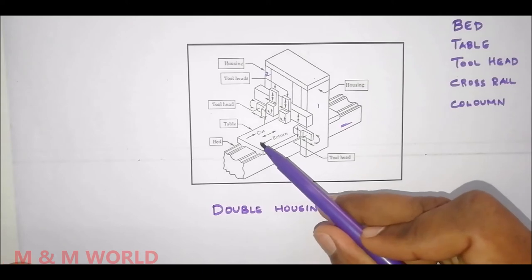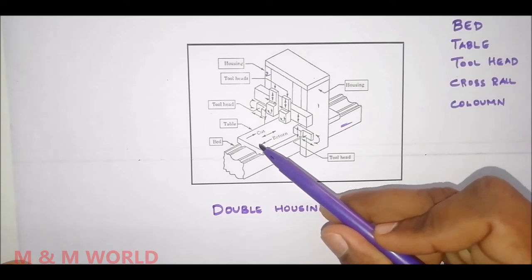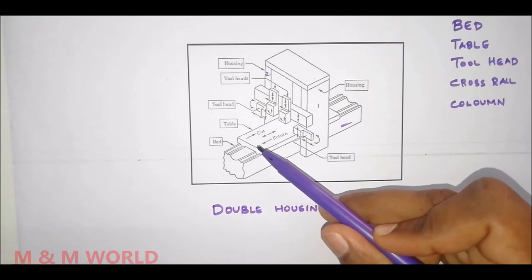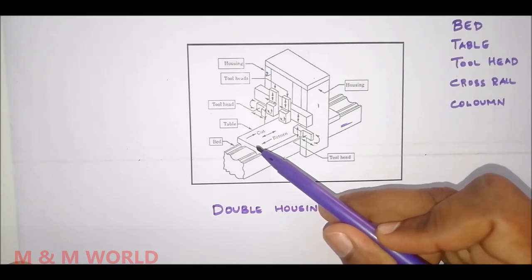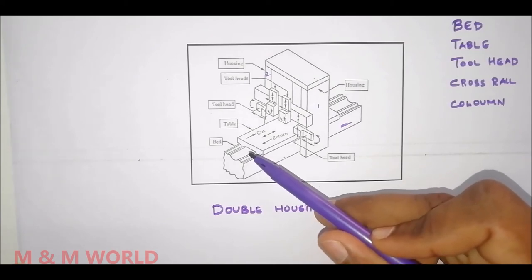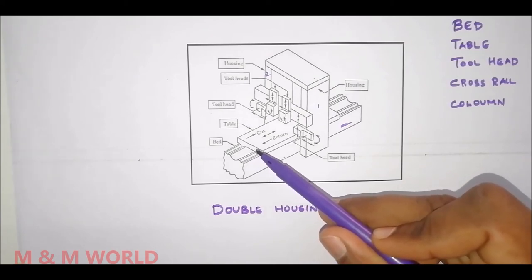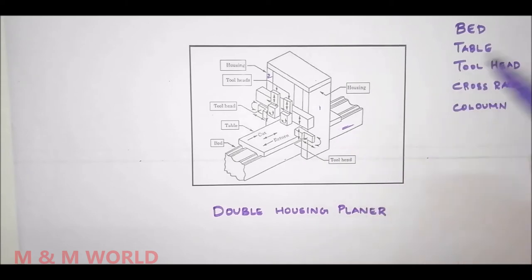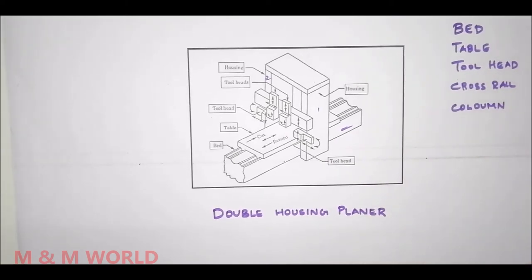The top face of the planer table is accurately finished in order to locate the work correctly. The table is provided with slots so that the work and work holding devices may be bolted upon it. At each end of the table, a hollow space is left which acts as a trough for collecting the chips.